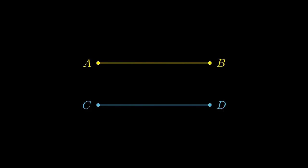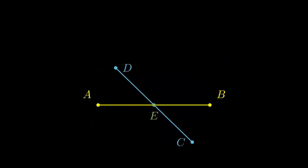Here, there are two line segments, AB and CD. I put them together. I put a point E at the center of the line segment. We can rotate the segment CD around the point E.